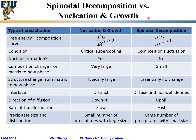After we talked about spinodal decomposition, let's now compare spinodal decomposition with the typical, more common nucleation and growth process for the same types of solid state transformations such as precipitation. This table compares nucleation and growth in the middle column versus spinodal decomposition in the right column in different aspects.